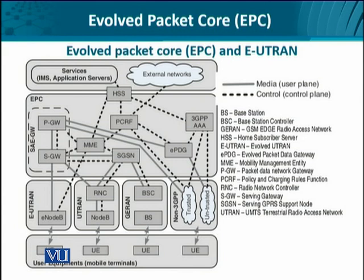The eNodeB is now connected to the Evolved Packet Core — the super functional module above it — which includes the Packet Gateway, Serving Gateway, Mobility Management Entity, Policy and Charging Rules Function, Home Subscriber Server, and SGSN. The Serving Gateway and Packet Gateway together serve the role previously played by the GGSN. We also have the Evolved Packet Data Gateway with a bearer path to the Packet Gateway. Dotted lines indicate control signaling and continuous lines indicate user connectivity.